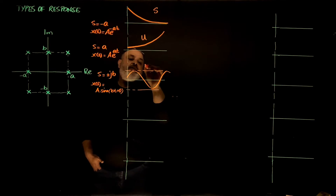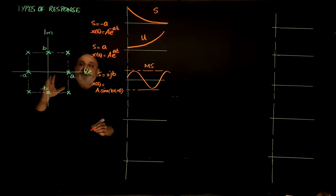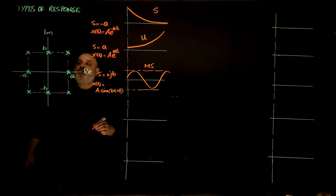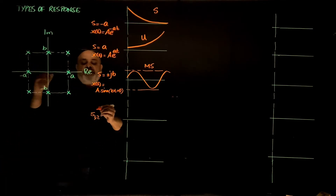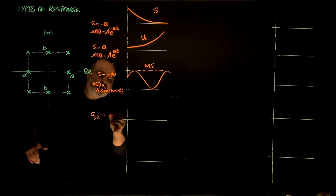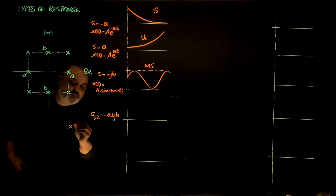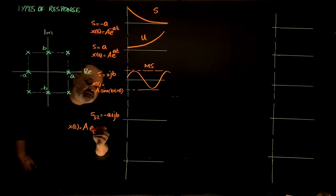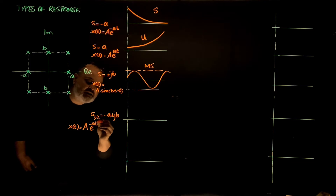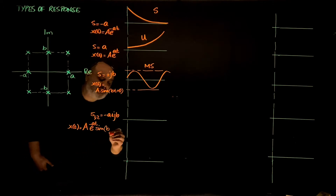So: negative real root is stable, positive real root is unstable, imaginary axis root is marginally stable. Now we've covered the real and imaginary axes. Let's cover the space in between. If the roots are complex roots on the left half side — negative a plus or minus j·b — then x(t) is going to be some amplitude times e to the negative a·t (the real part) times...